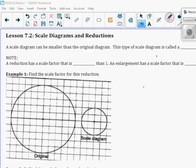Today we're going to do reductions. A scale diagram can be smaller than the original diagram. This type of scale diagram is called a reduction. A reduction has a scale factor that is less than one, and an enlargement has a scale factor that is more than one that we saw the other day.